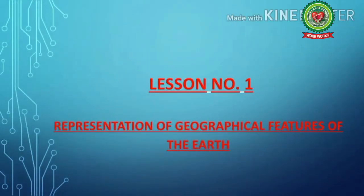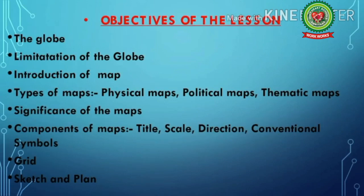Hello students, welcome back to geography class of sixth standard. We were doing chapter number one: representation of geographical features of the earth. In the first two videos, the topics we discussed were the globe, limitation of the globe, introduction of map, types of maps — physical maps, political maps, and thematic maps — then significance of maps and components of maps. In components of maps, we already discussed the first two components: title and scale.